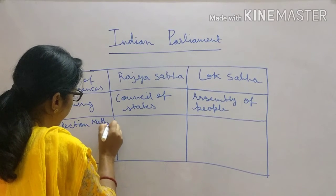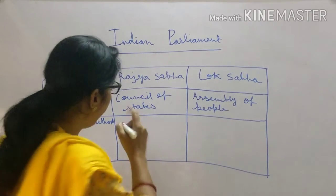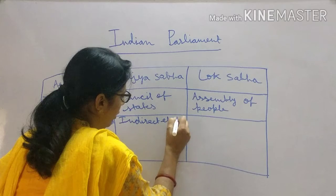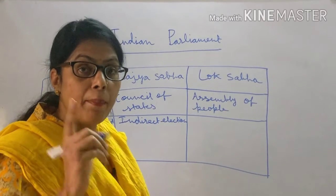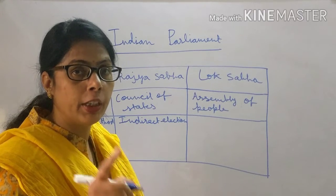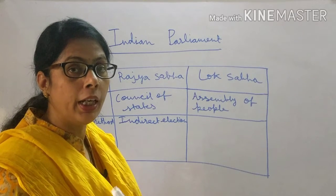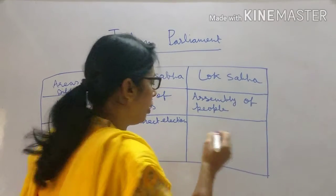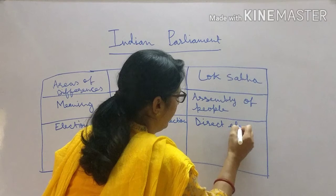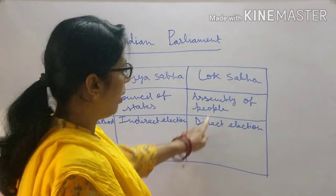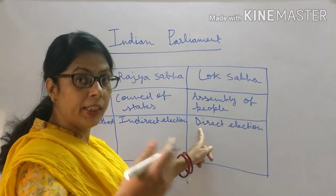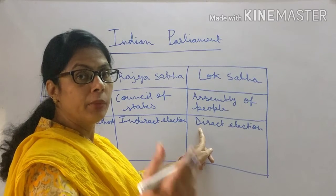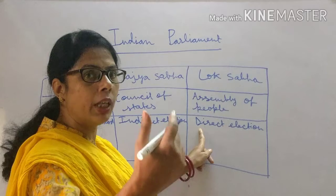The election method differs between the two houses. In Rajya Sabha, there is indirect election — members cannot be elected by the citizens of the country directly; they are elected through the members of the State Legislative Assembly. In Lok Sabha, there is direct election, because Lok Sabha is the assembly of the people and represents the people of the country. Voters elect their representatives directly to the Lok Sabha.